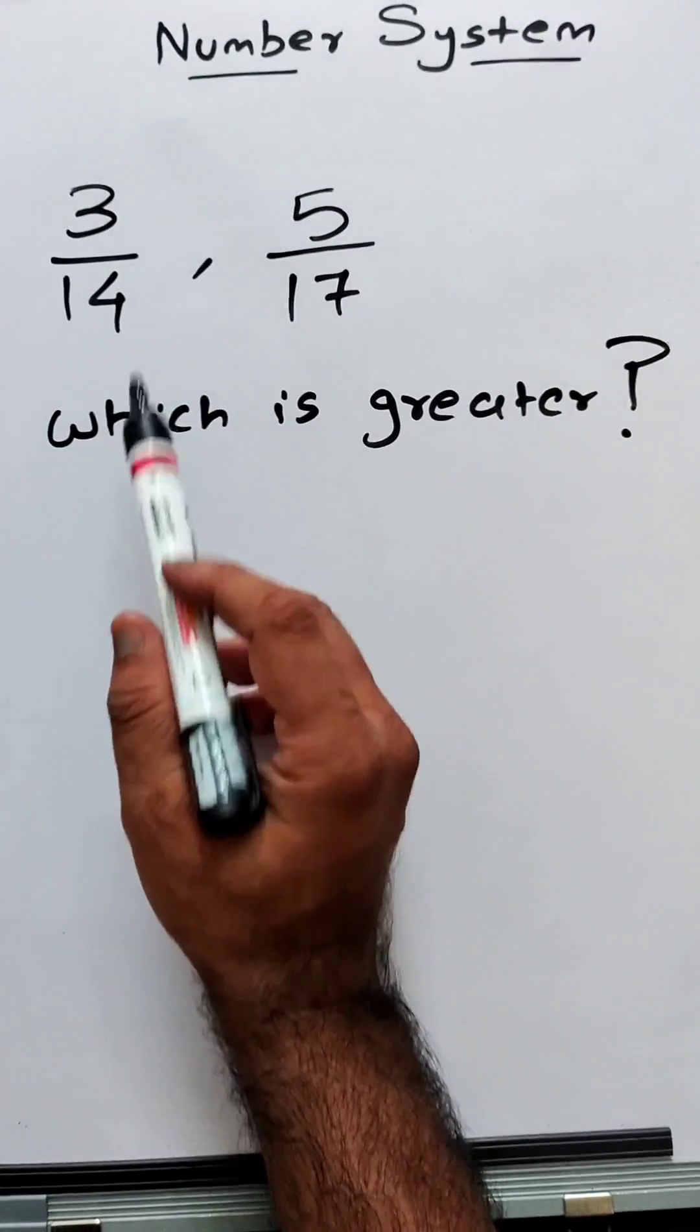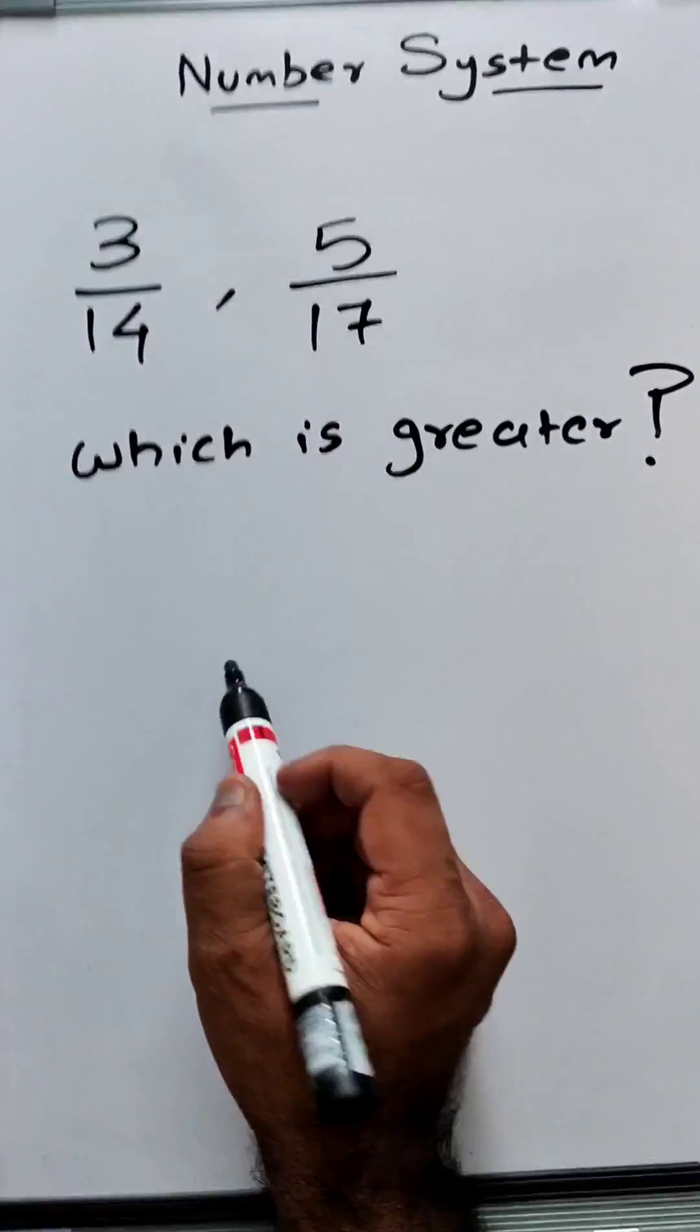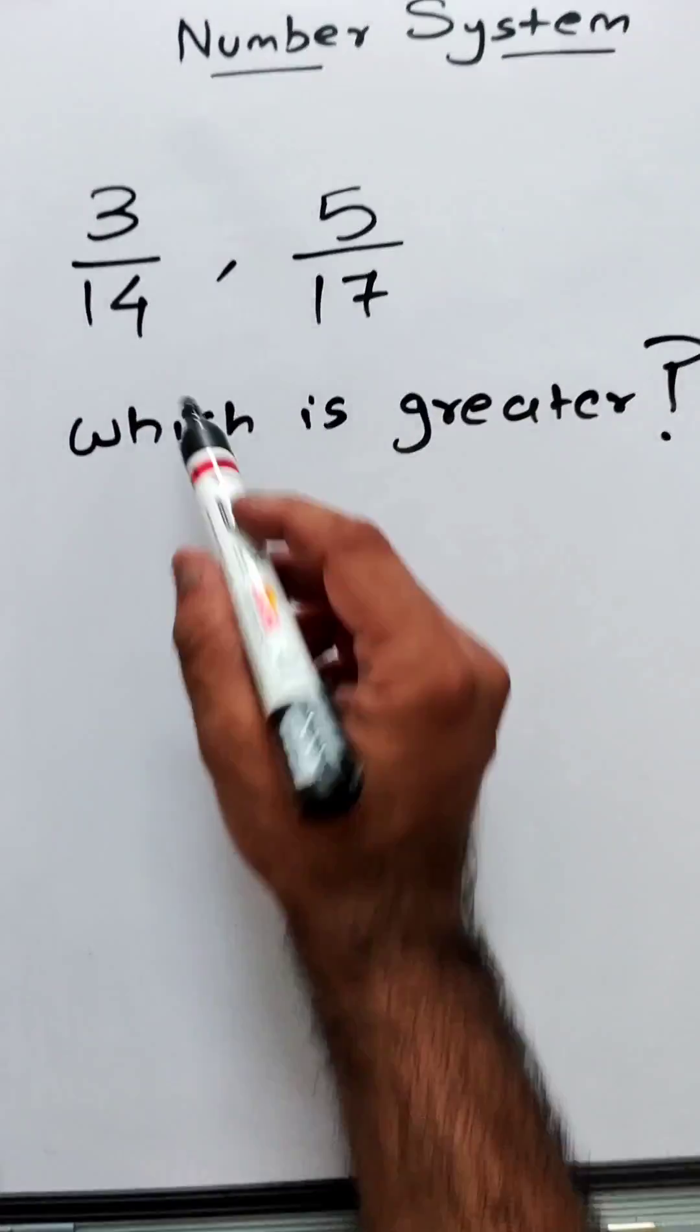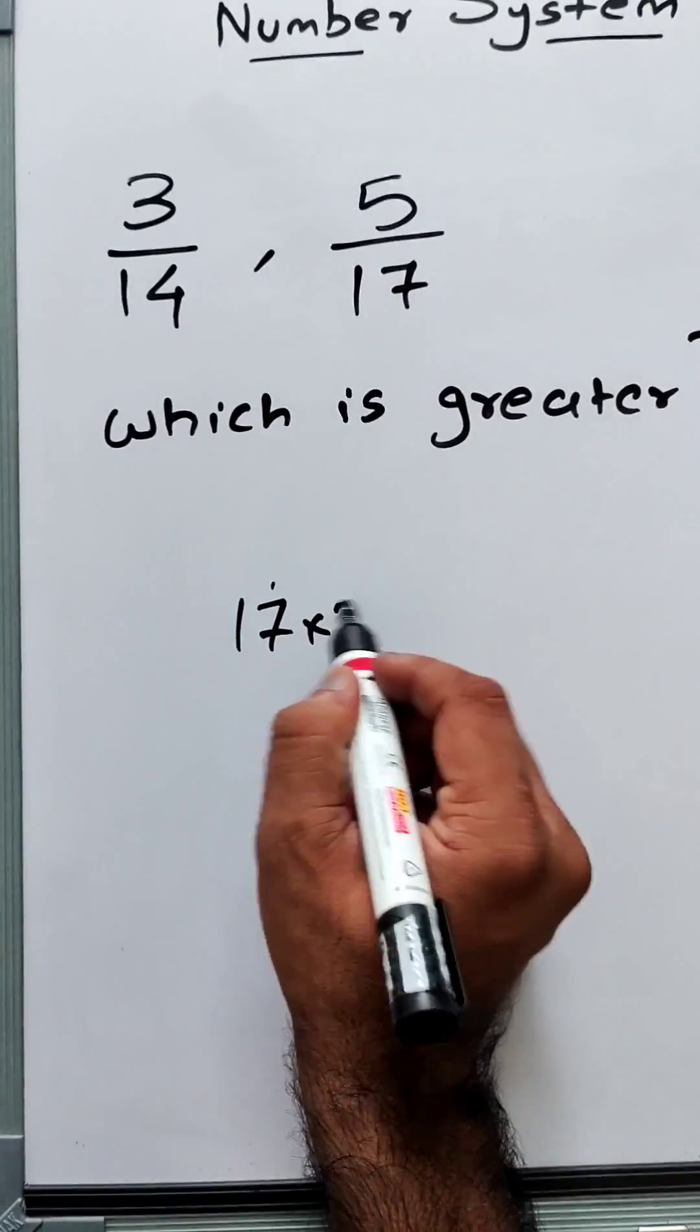Now we have to determine which of the following fractions is greater. It's a very simple method. What we do is cross multiply and then check. So 17 into 3 and then 14 into 5.